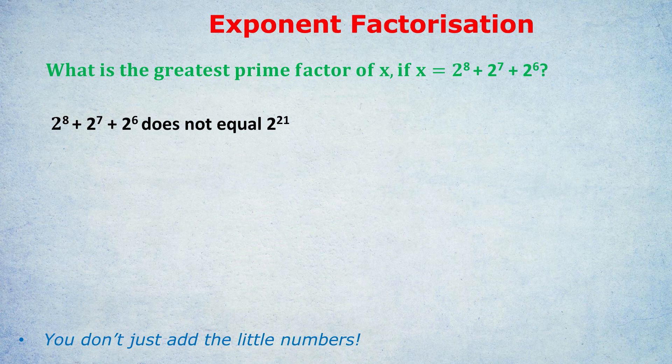Many students revise the rules for what to do when exponents are multiplied. If you have 2 to the power of 8 times by 2 to the power of 7, many students know that will become 2 to the power of 15. That's when you add the little numbers.